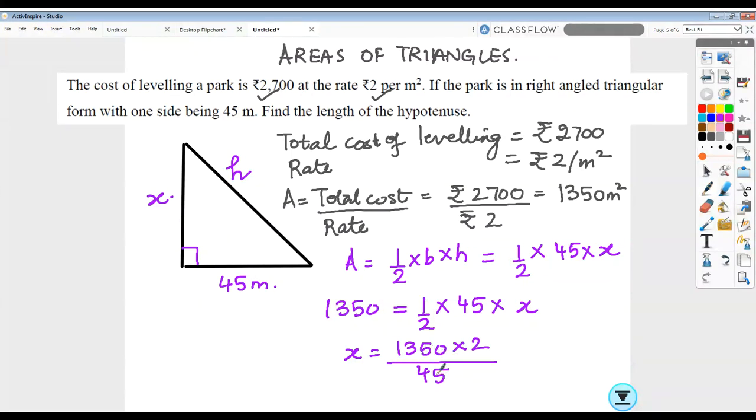Let's cancel them with a common factor of 5, so I can get 270 here and I get 9. 30 into 2 is 60. So the other side has been calculated as 60 meters because I had the area, one of the legs, but not the height.